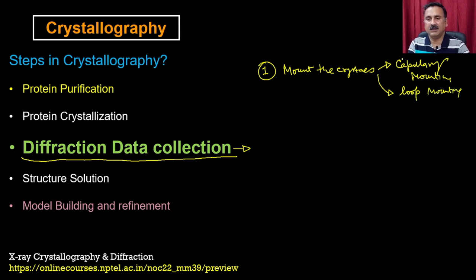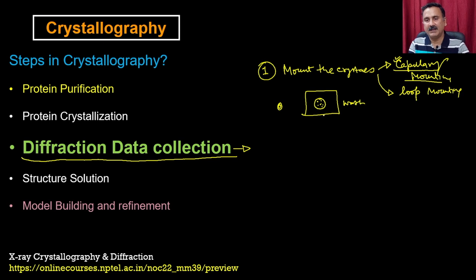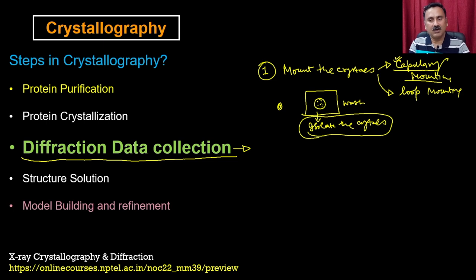Capillary mounting is a slightly older method where people are putting the crystal into a capillary. You can imagine that I have sucked the crystals from the drop. What you are going to do in the mounting of the crystal is that you are going to open the crystal and the cover slips. Once you open the cover slip, you are going to see a drop and in these drops you have the crystals. First you are going to watch this drop and then you are actually going to isolate the crystals. These crystals can then be placed either into the capillary or in the loop.